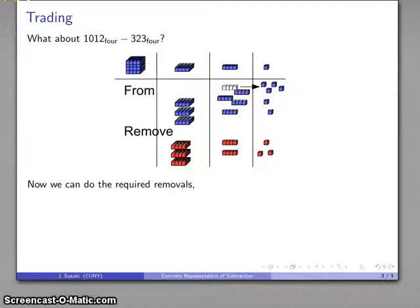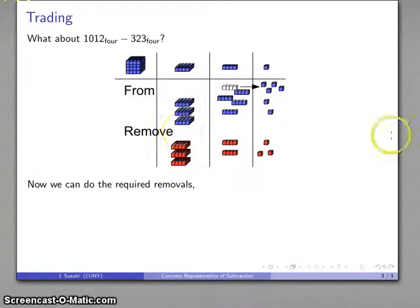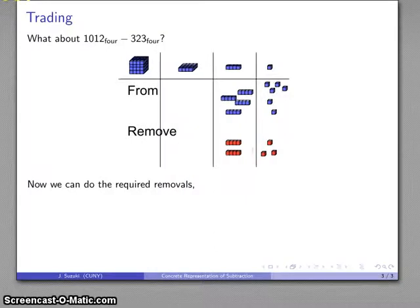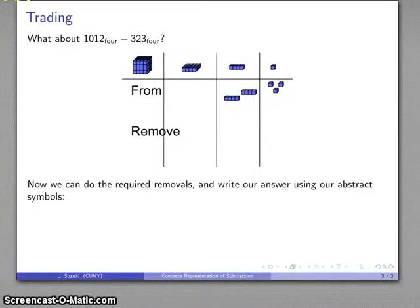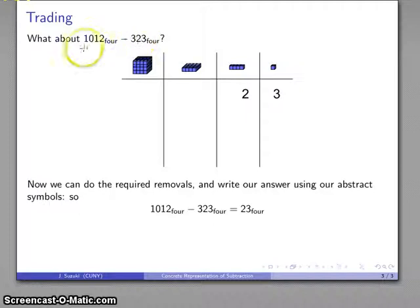And I can do the required removals. So, I'm going to remove 3 from here, and that leaves me with nothing. I'm going to remove 2 from here, and then I'm going to remove 3 from here. And now I am in a position that I can actually write my answer down using my abstract number symbols. I have 2 of these, and 3 of these, so I can write my answer 23, and all together, that difference, 1012 minus 323 base 4, is going to be 23 base 4.